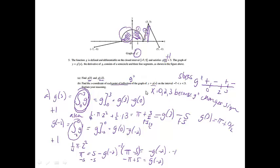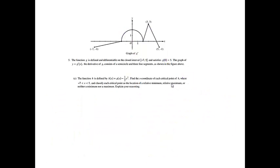That one was worth 2 points: one for identifying 0, 2, and 3, and one for the justification and explanation. Part C: The function h is defined by h of x equals g of x minus one half x squared, a slight tweak to the g function.